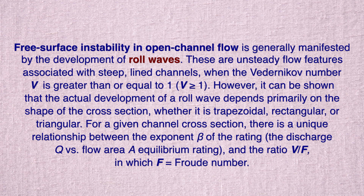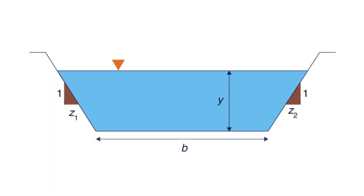Free surface instability in open channel flow is generally manifested by the development of roll waves. These are unsteady flow features associated with steep-line channels when the Bedernikov number V is greater than or equal to 1. However, it can be shown that the actual development of a roll wave depends primarily on the shape of the cross-section, whether it is trapezoidal, rectangular, or triangular.